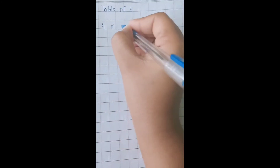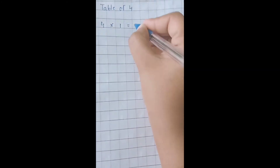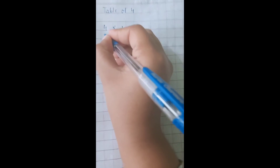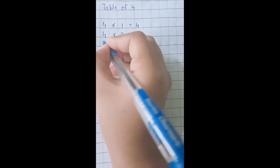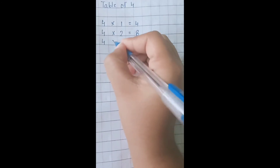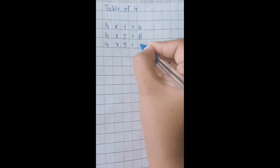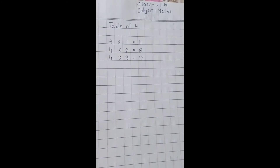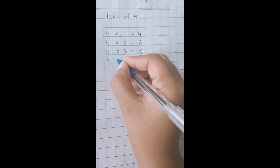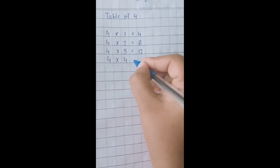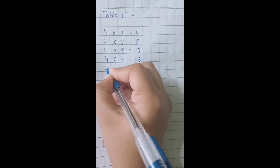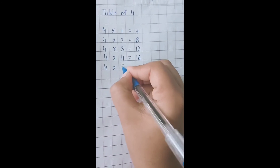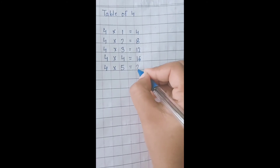4 into 1 equal to 4. 4 into 2 equal to 8. 4 into 3 equal to 12. 4 into 4 equal to 16. 4 into 5 equal to 20.